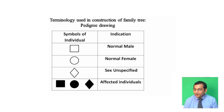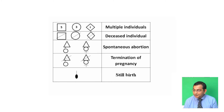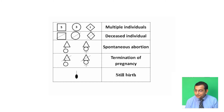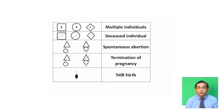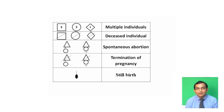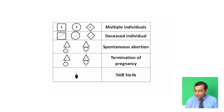In case of multiple individuals, Arabic numerals are placed inside the square, circle, or diamond, which indicates the number of individuals.